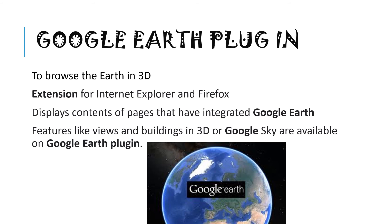The Google Earth plugin allows you to browse the Earth in 3D. It's an extension for Internet Explorer and Firefox — and strictly speaking, an extension is not exactly the same as a plugin. It displays contents of pages that have integrated Google Earth, so some pages might have a little Google Earth map. It features things like views and buildings in 3D, or Google Sky, which is another Google product that allows you to look at the stars in the sky.